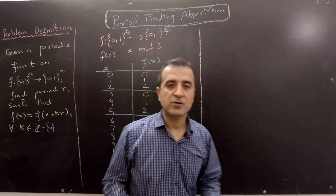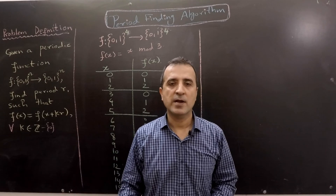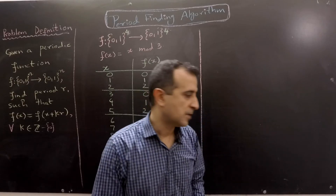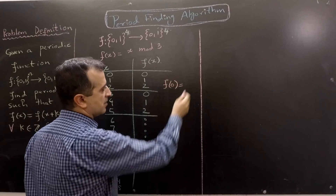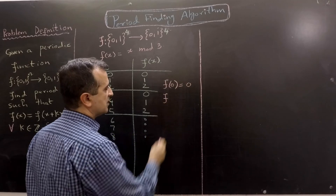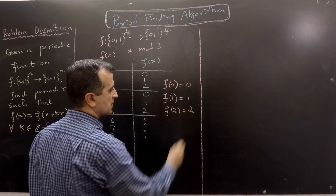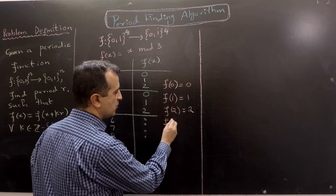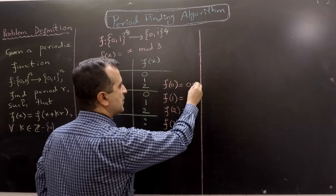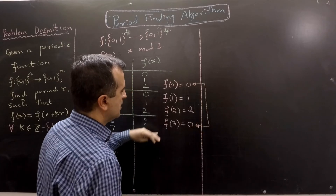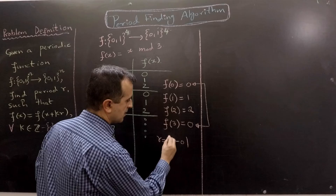How can we solve this problem on a classical computer? We can give different inputs to the function to find two outputs that are the same. For example, we give input 0 and get output 0, then input 1 to get output 1, then input 2 to get output 2. So far no output has been repeated, but when we give input 3 we get output 0, which we have seen before. The period R is the difference of the two inputs that produced the same output.